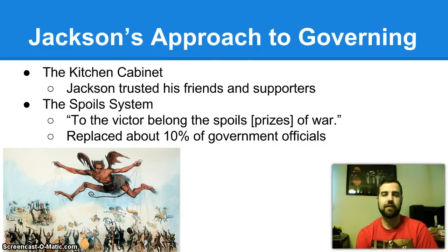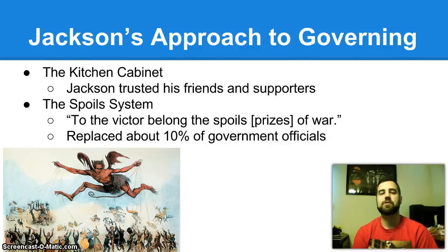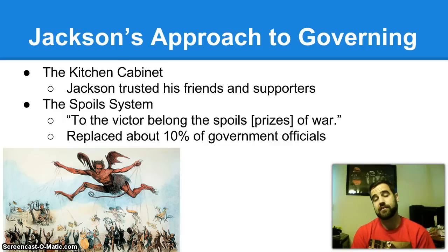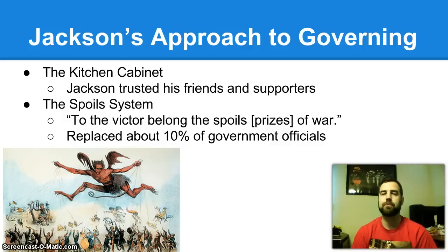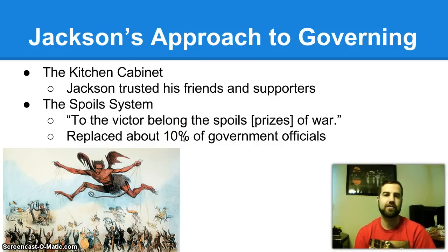When Jackson won the election, two notable things occurred. First was the kitchen cabinet: Jackson didn't rely heavily on his official cabinet members, but instead trusted his friends and supporters — people he had trusted with his life. He would meet with them in the White House kitchen, and they got the nickname the 'kitchen cabinet,' since the cabinet's role is to give advice to the president. Second was the spoil system: Jackson's opponents were upset because he was removing government officials and replacing them with Democrats, his own supporters. In reality, he only removed about 10% of officials, about the same as his predecessors.